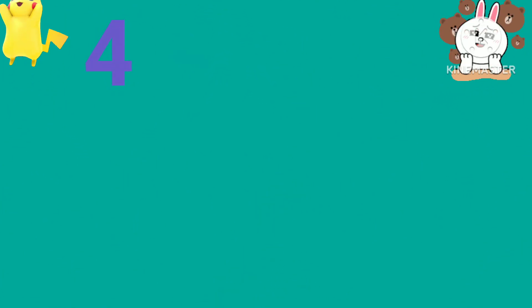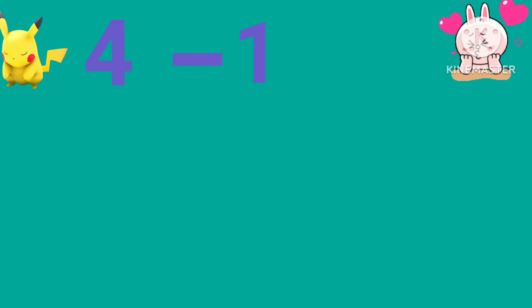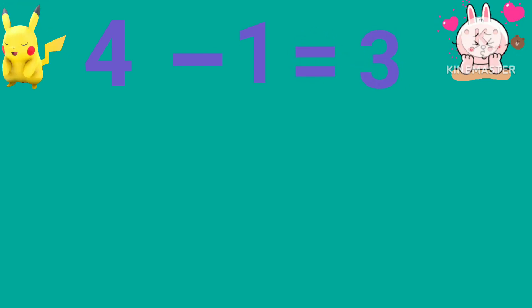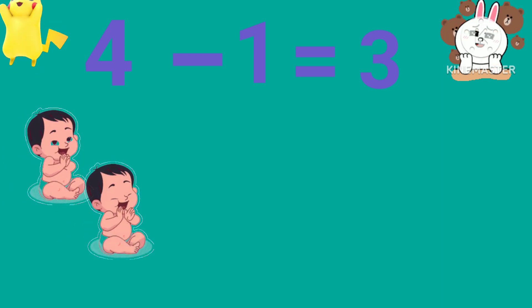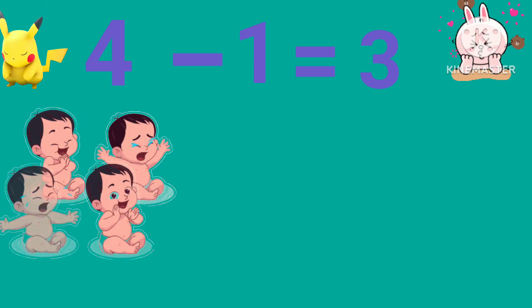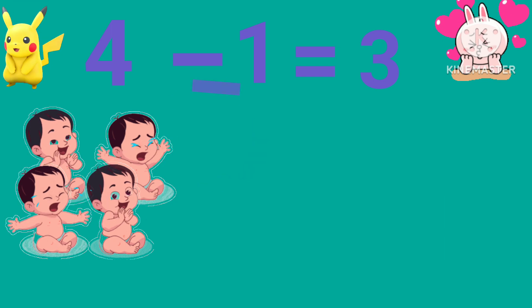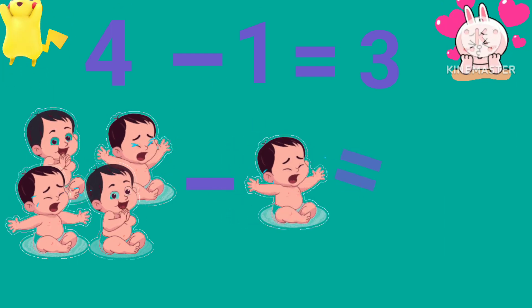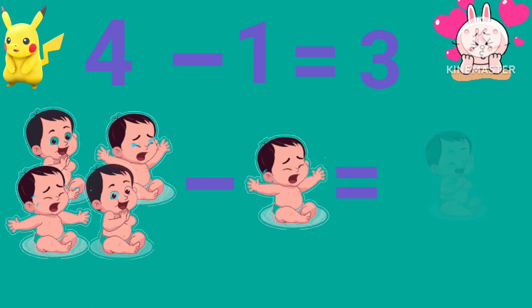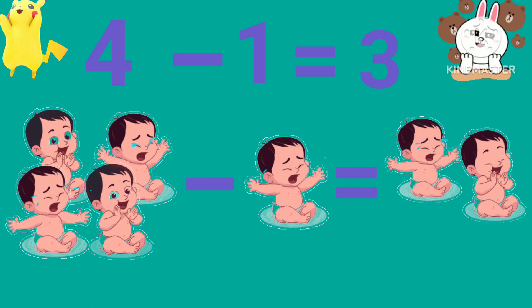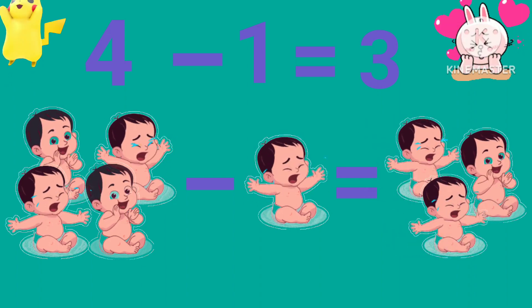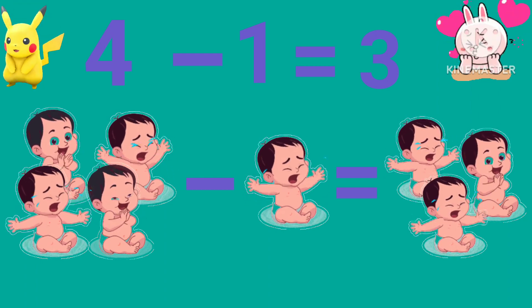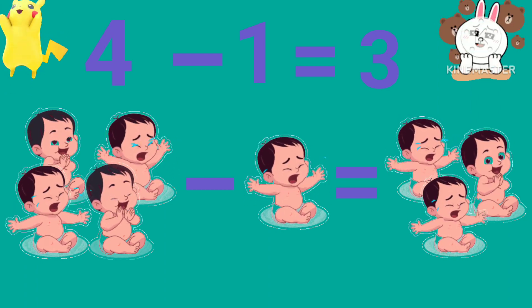4 minus 3 is equal to 1. We have 4 babies minus 3 babies, which gives us 1 baby. So 4 minus 3 equals 1.